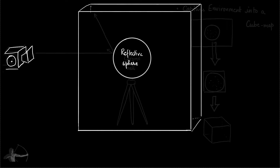When we captured the information of the environment, the environment was the lighting information for us. Now we have the cube map in our scene which will be treated as lighting information for that scene. To calculate the color at this point of the sphere whose normal is pointing in this direction, we will calculate the view direction — the direction from this point of the surface to the camera, to the eye. Then based on this view direction, we will calculate its reflected vector. This is the view direction and this is the reflection vector.